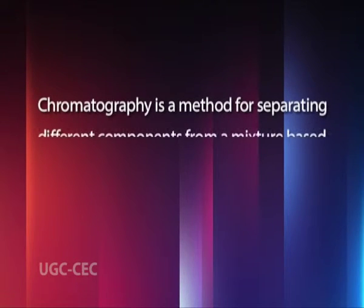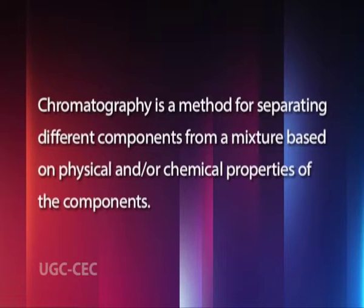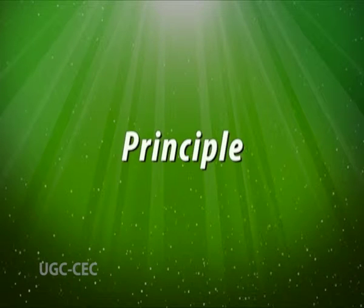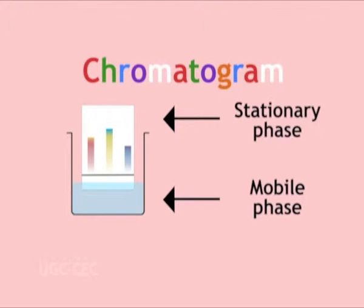Chromatography is a method for separating different components from a mixture based on physical and/or chemical properties of the components. All types of chromatography are based on a very simple principle. The sample to be examined, called the solute, is allowed to interact with two phases: a mobile phase and a stationary phase. The mobile phase, which may be gas or liquid, moves the sample through a region containing the solid or liquid stationary phase called the sorbent.